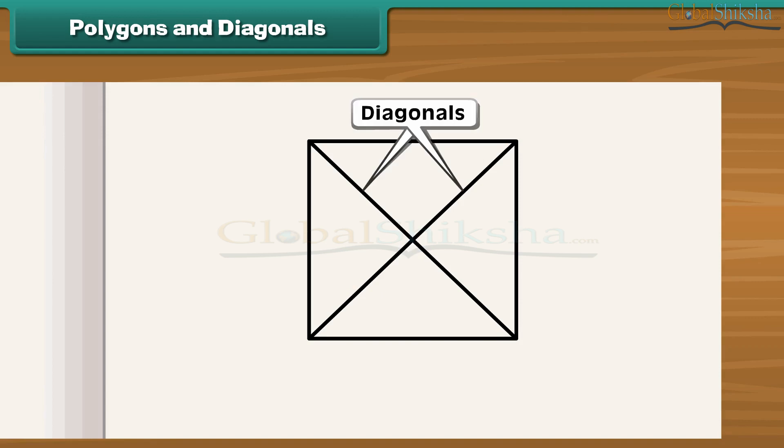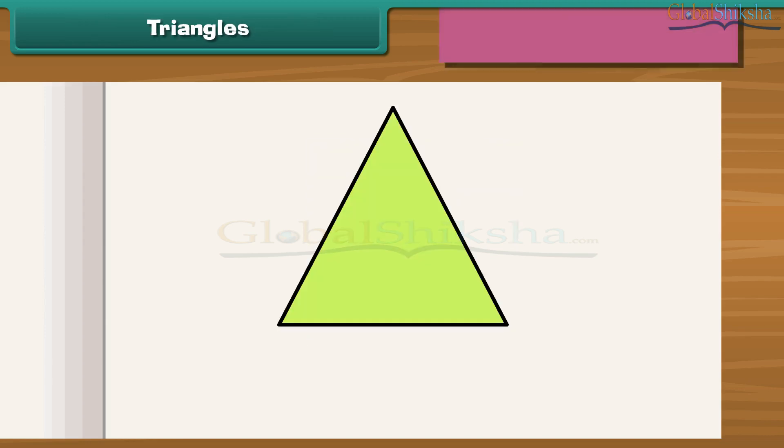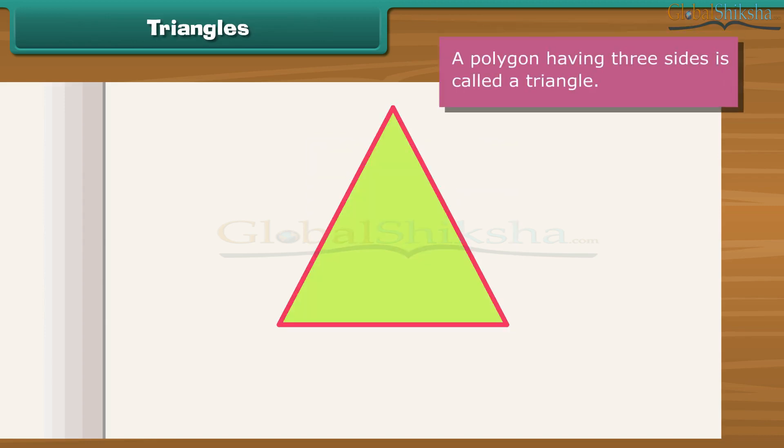A side of a polygon is not a diagonal. A polygon having three sides is called a triangle. It has three vertices and three angles. Triangle is denoted by the given symbol. This is triangle ABC. It can also be named as triangle BCA or triangle CAB.